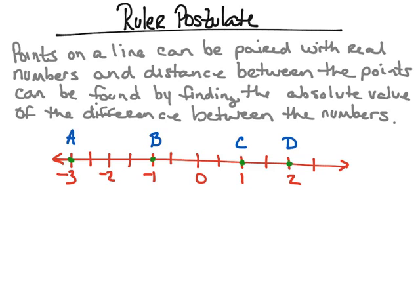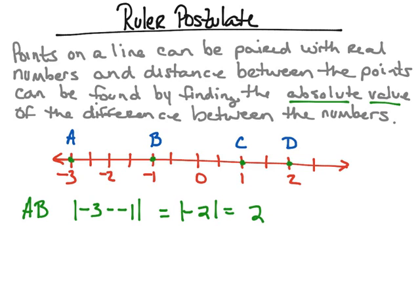The distance between points can be found by taking the absolute value of the difference between their numbers. For example, if I want to find the distance between point A and point B, I take the absolute value of negative 3 minus negative 1. That gives me negative 2, but taking the absolute value of negative 2 gives a positive 2. So the distance between point A and point B is 2 units.